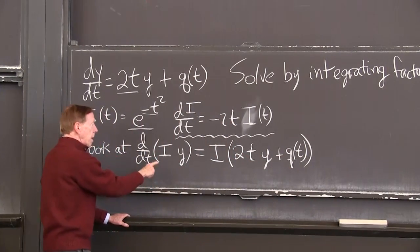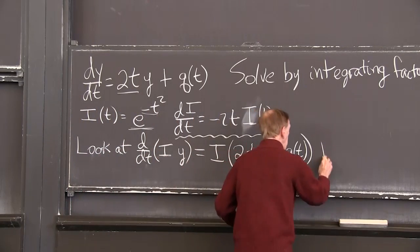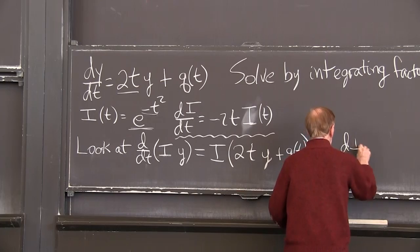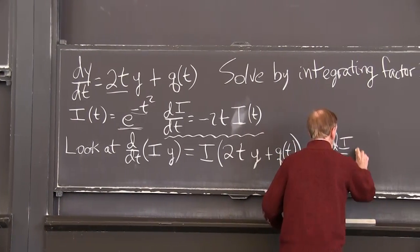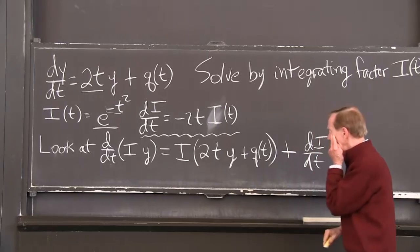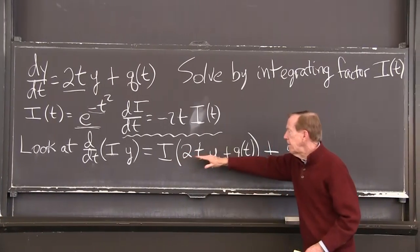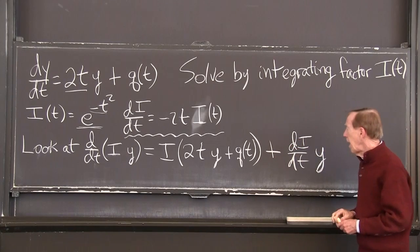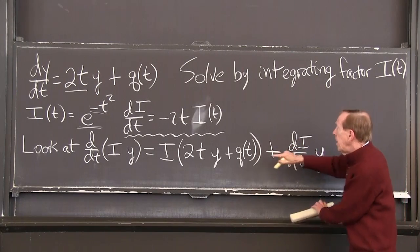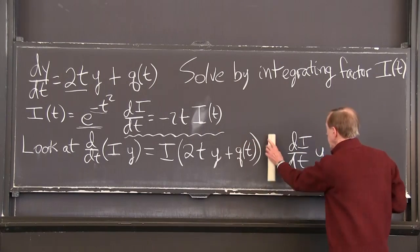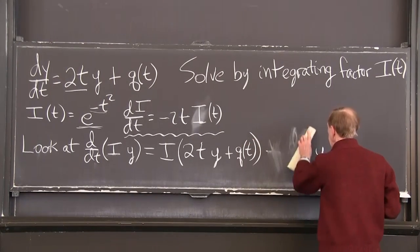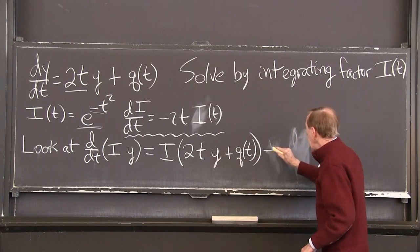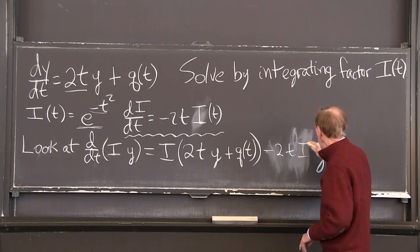and now I have to add on di dt y. Good. So it's the product rule i times the derivative of y plus the derivative of i times y. But now look, di dt we know is minus 2ti. So that di dt, now I'm using the key fact about i, that that's minus 2ti y.